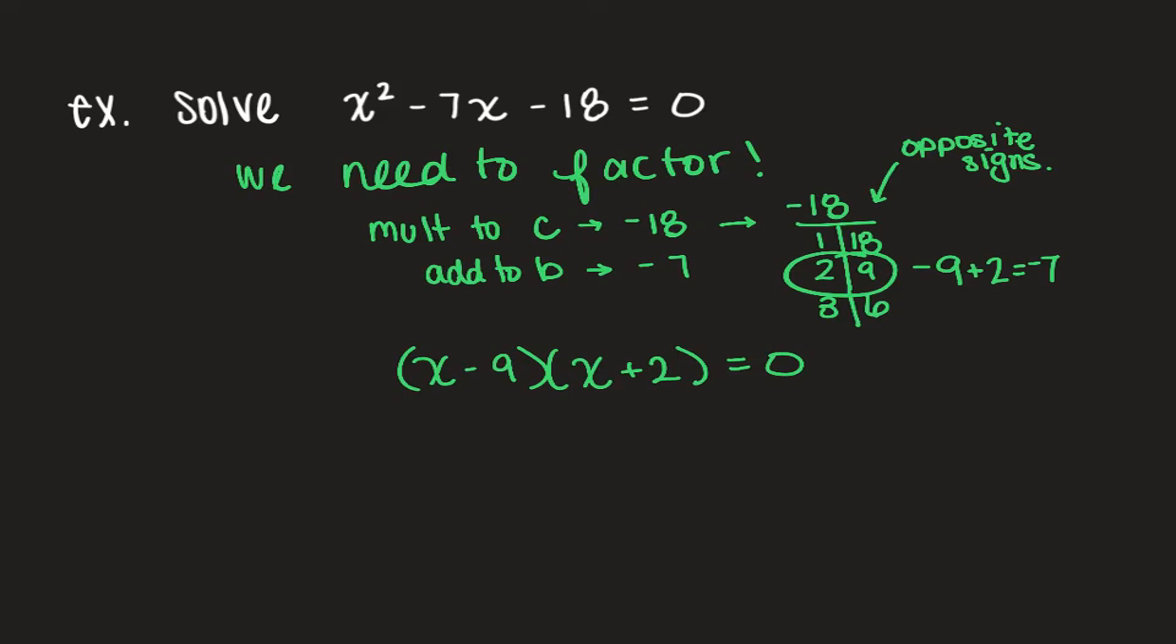So now let's actually apply our zero product property that we learned today. So we're going to separate these into two smaller equations. We have our first group, and then we have our second group. Let's do the first group. So we're going to have x minus 9 equals 0. We're taking each group and setting them equal to 0. There's our x plus 2 equal to 0.